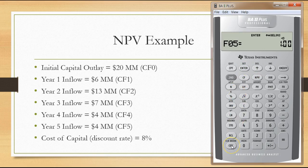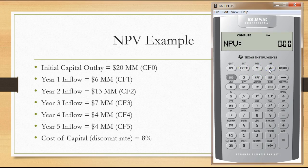Once all cash flows and frequencies are stored, your next step is NPV. Press NPV and it will say I equals — this is asking for your cost of capital or discount rate. Our discount rate is eight percent, so we enter eight and hit enter. Hit the down arrow and it will say NPV equals zero. To get the actual NPV, press compute. In this case our NPV is positive 7.92 million dollars, meaning this project adds approximately 7.92 million dollars to the value of our firm — we should accept this project.